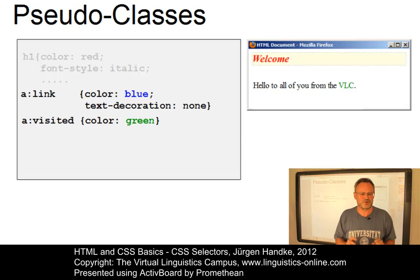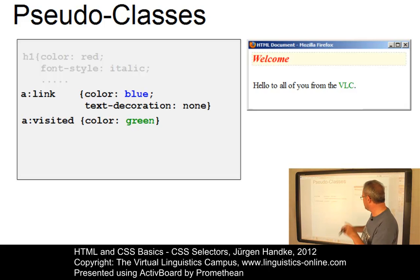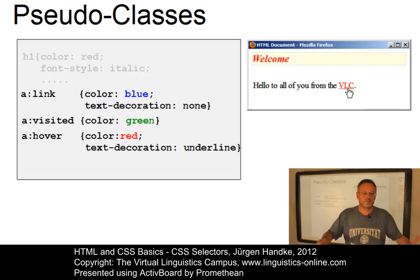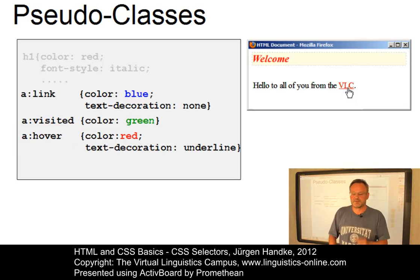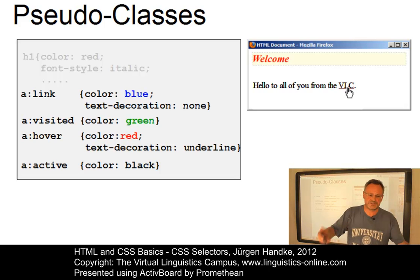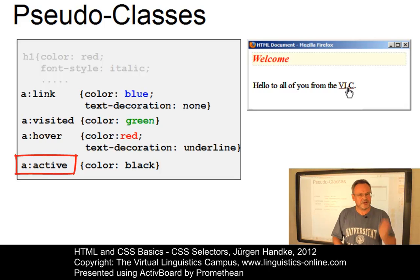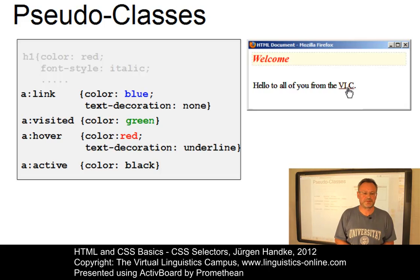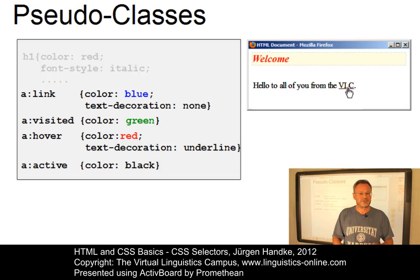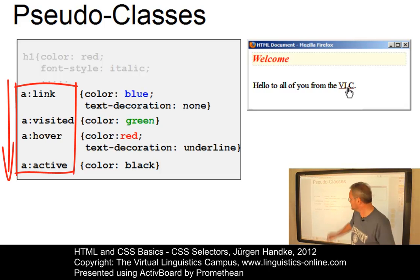Whether the colors are really useful is a different story — we want to illustrate the effects rather than use ideal colors. When the mouse cursor hovers over the link, we want it to be red and underlined. The 'a:hover' class does the job. The final state is the active state, when we click on a hyperlink — 'a:active' is the responsible class, and we use the color black. The sequence of these pseudo-classes in the stylesheet must be followed for the effects to work properly — changing the sequence will prevent the effects.